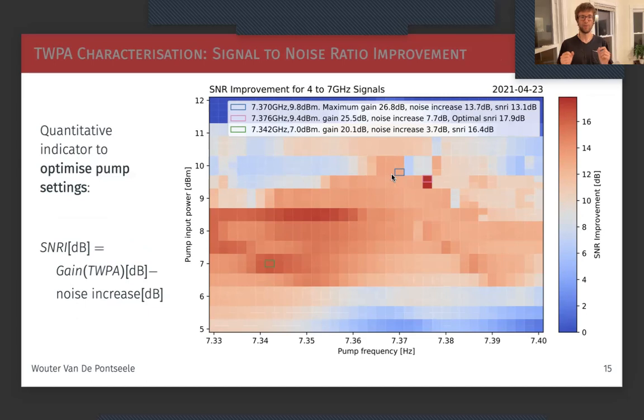So now to find a quantitative indicator to optimize these pump settings, we're going to look at the signal-to-noise ratio improvement. This is the subtraction of the gain and the noise increase. Now we see that the blue box is definitely not the optimal. The optimal is in the small island over here, but I will argue that because this is such an isolated space, for stability reasons it's smarter to pick pump settings where the green box is located and still have very good gain and signal improvement.